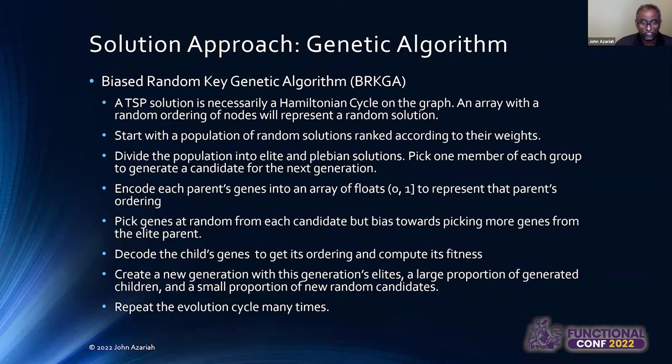And this is what a genetic algorithm looks like. So in our system, what we'll do is we'll create a population of random solutions. Each of these random solutions is that random ordering of nodes as I mentioned earlier. And we'll rank them according to the weights, because once you have a random solution, then we can go through and compute how long it takes to go down that tour, and we'll find the best tours and put them at the top of the list. Then we'll take this population and divide it into two bits somewhere, and say, okay, this bit of the population is the elite population, and the other ones are not so elite. And what we'll do is we'll pick a parent from each of the groups and start trying to create a child from that.